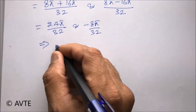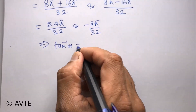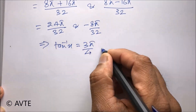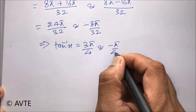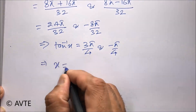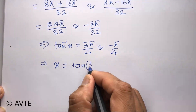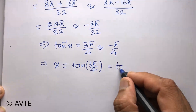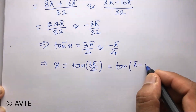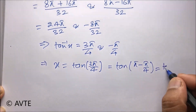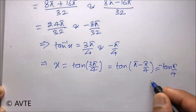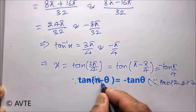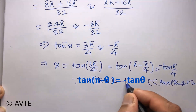With this, we have tan inverse of x equal to 3 pi divided by 4, and in the second case, minus pi divided by 4. So x equals tan of 3 pi divided by 4, which is 135 degrees. We can also note that tan of 180 minus theta is minus tan theta.